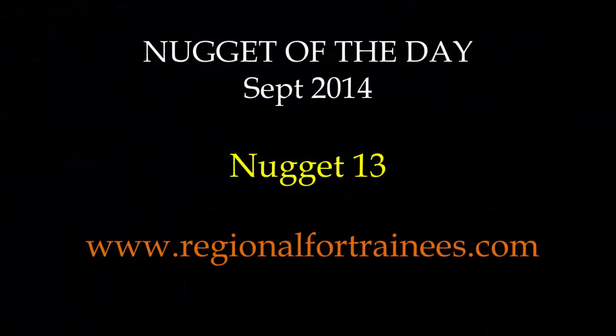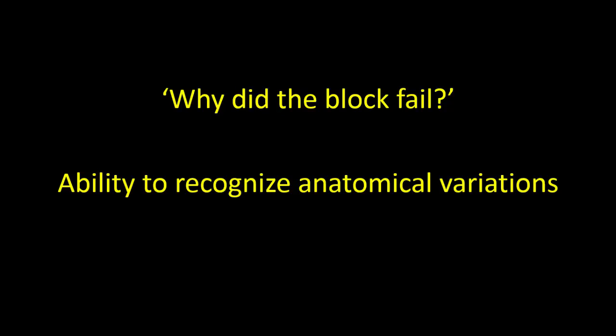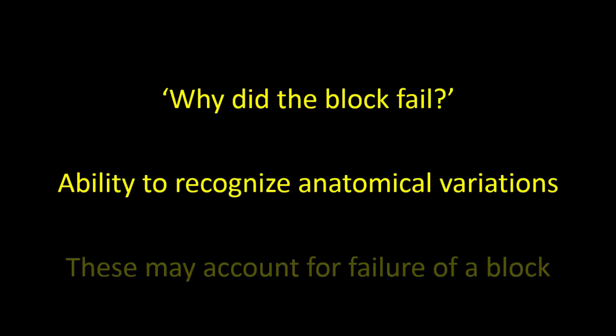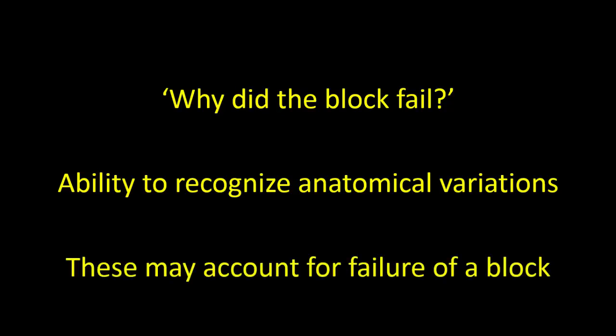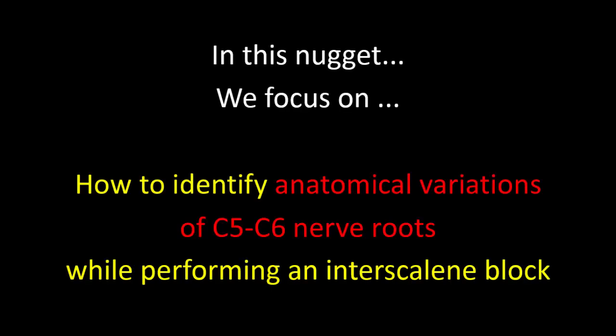Hello all and welcome to another nugget of the day. This is nugget 13. We've all had failures in regional anesthesia and we often wonder why did the block fail. One of the advantages of using ultrasound for nerve blocks is the ability to recognize anatomical variations, which may account for failure of a block especially if we use low volumes. In this nugget we focus upon how to identify anatomical variations of C5 and C6 nerve roots while performing an interscalene block.